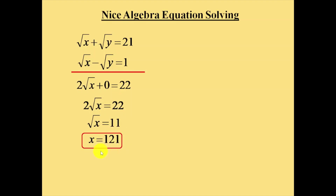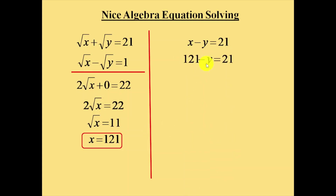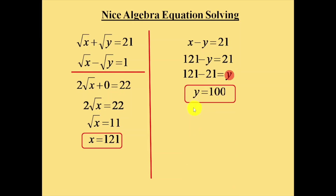Now take this value and substitute into the second equation, x minus y equals 21, which was provided in the question. Substituting x equals 121 gives 121 minus y equals 21. Rearranging, 121 minus 21 equals y. So y is equal to 100.